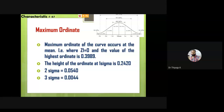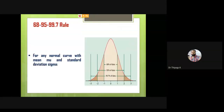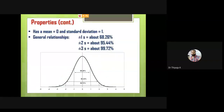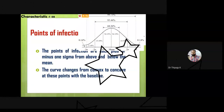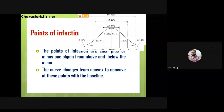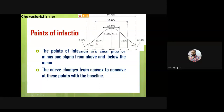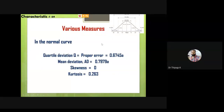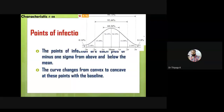The eighth property is the point of inflection. The point of inflection occurs at plus or minus one sigma. At that one sigma point, the curve changes from convex to concave. That is property number eight — the point of inflection occurs at each plus or minus one sigma from the mean.